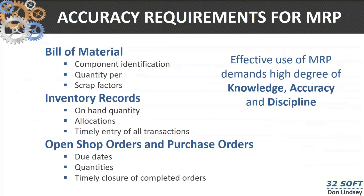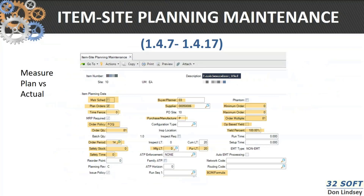The rules or the requirement for accuracy in MRP cannot be stated enough. The effective use of MRP requires knowledge, planners who know what they're doing, accuracy in terms of on-hand, on-order, planning data, and a regular discipline for bills of material, inventory, and shop floor control.